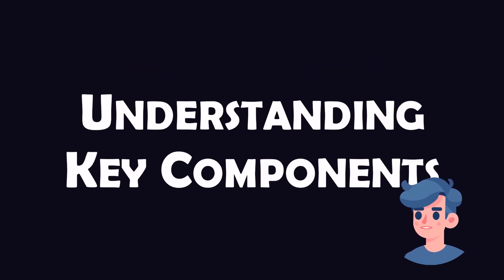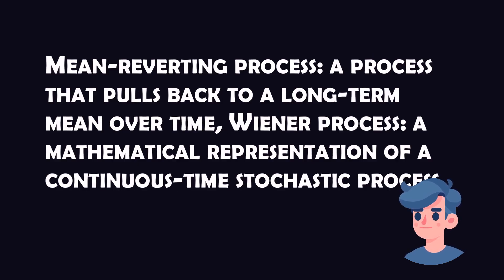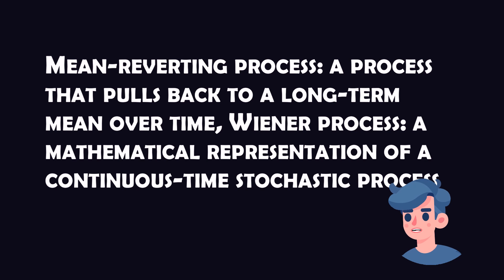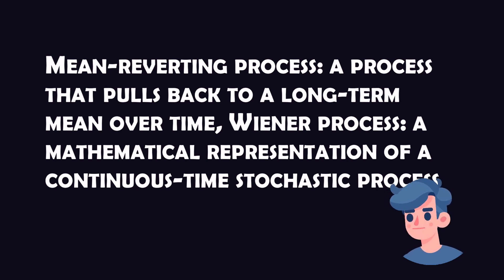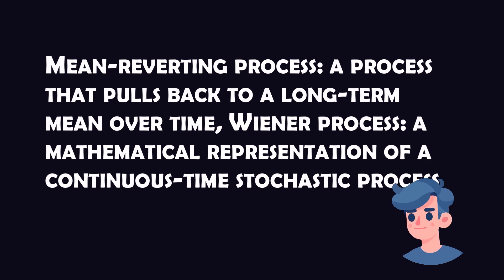Let's break down the terms in this equation. The term a(b - r_t)dt indicates the drift, or the direction of the interest rate change, governed by the mean-reverting behavior. The term sigma dW_t represents the random fluctuation, where sigma is the volatility of the interest rate and dW_t is the increment of the Wiener process.